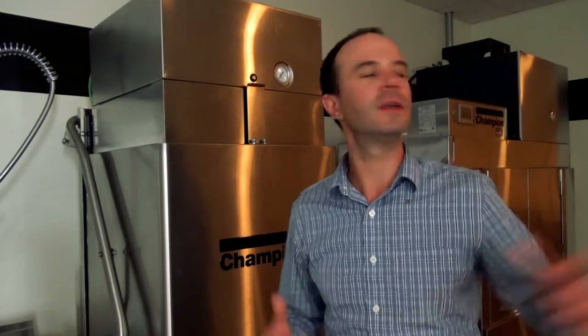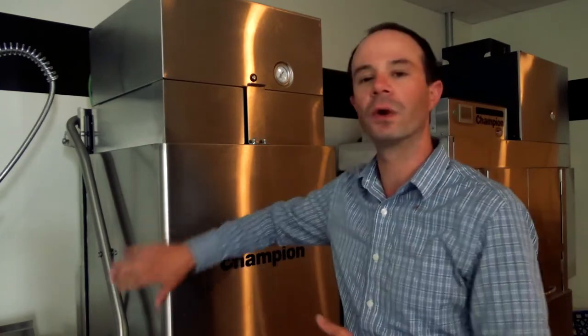Stationary rack refers to things like an undercounter dishwasher or a door style or upright dishwasher. The rack is not moving inside the machine. It's stationary. You wash one rack at a time—you open the door, pull the rack out, put the next one in. Easy enough.